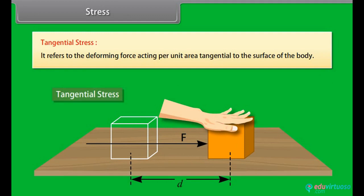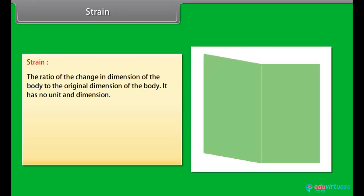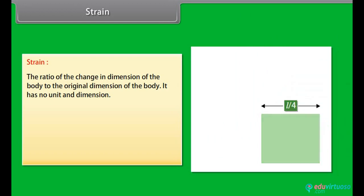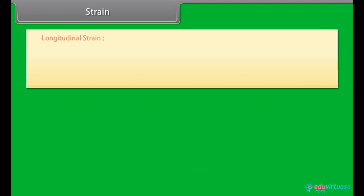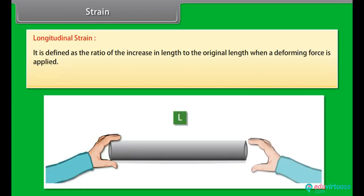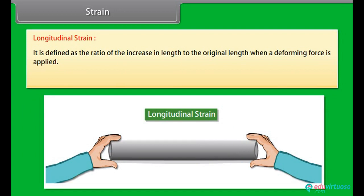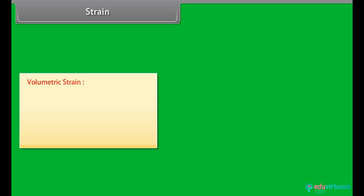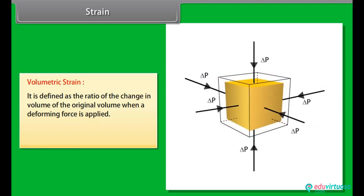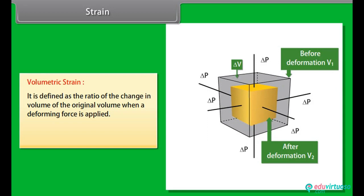Tangential stress refers to the deforming force acting per unit area tangential to the surface of the body. Strain is defined as the ratio of the change in dimension of the body to the original dimension of the body. It has no unit or dimension. It is of three types: longitudinal strain, volumetric strain, and shearing strain. Longitudinal strain is the ratio of the increase in length to the original length when a deforming force is applied; longitudinal strain equals ΔL divided by L. Volumetric strain is the ratio of the change in volume to the original volume; volumetric strain equals −ΔV divided by V.